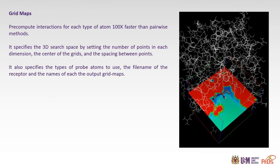Grid maps precompute interactions for each type of atom 100 times faster than pairwise methods. It specifies the 3D search space by setting the number of points in each dimension, the center of the grids, and the spacing between points. It also specifies the types of probe atoms to use, the file name of the receptor, and the names of each output map.